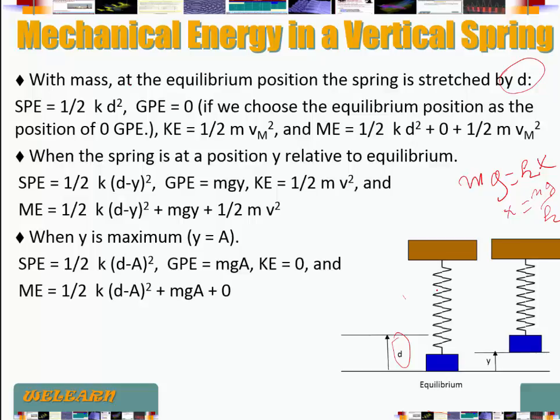At equilibrium, the spring-mass system has the spring stretched by an amount d. So as the spring oscillates from that position, it's going to have spring potential energy in it. Different from the horizontal spring-mass system, at the equilibrium position we are going to have spring potential energy — it's one half of kd squared. Since it's a vertical system we also have gravitational potential energy involved. However, if we choose the equilibrium position as the reference for gravitational potential energy, then GPE equals zero there.